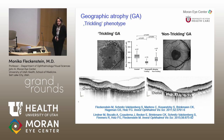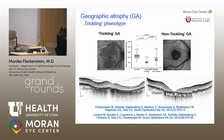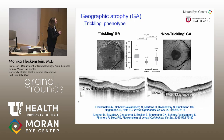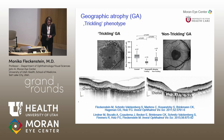Another interesting finding in this phenotype is that the choroid is significantly thinner compared to other GA phenotypes. In an analysis of several patients with trickling and non-trickling geographic atrophy, there is a significant difference in choroidal thickness. When you compare both groups to control eyes without AMD, you also see a significant difference in choroidal thickness. This phenotype is clearly associated with a rarefication or thinning of the choroidal vasculature.